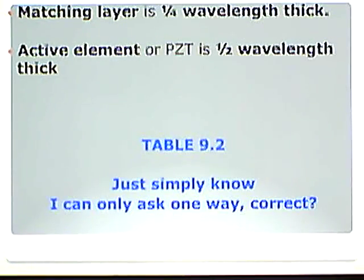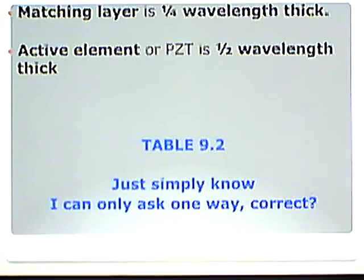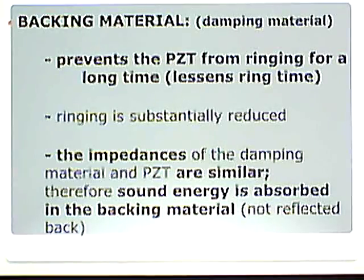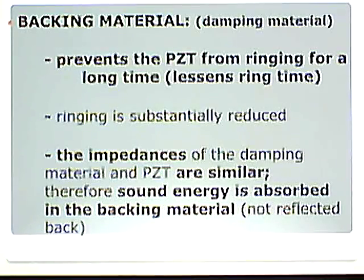So the matching layer is one fourth the wavelength thick. The active element or PZT is one half the wavelength thick. Remember that — those are very important statements. Table 9-2 tells us that. I'm going to pause it right here. The next video will be part two of chapter nine, so hang in there.